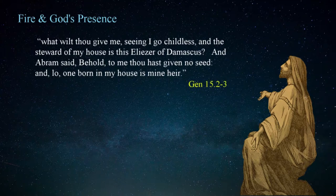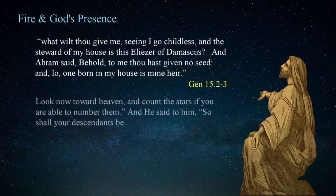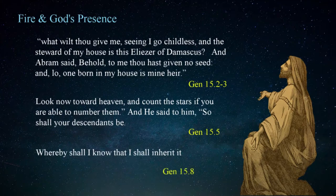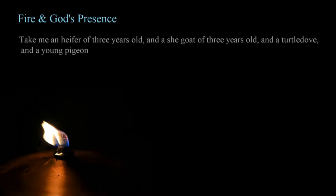God assured him that Eliezer wouldn't be his heir, then directed him to look to the sky, stating that his seed would be as numerous as the stars, in Genesis 15:5. God then restated his promise that the land he saw would be inherited by his offspring. Abraham then asked, 'Whereby shall I know that I shall inherit it?' Genesis 15:8. God told Abraham to take a heifer, a she-goat, a turtledove, and a young pigeon, in Genesis 15:9, and arrange the animals in pieces.